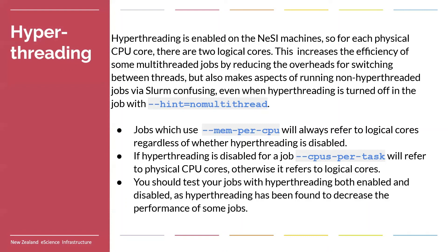One way around this problem of wasted CPU time from stalled threads is to oversubscribe CPUs — that is, assign a greater number of threads to fewer CPUs. So instead of assigning two threads to two CPUs, we could assign four threads to two CPUs. Now when one of the running threads stalls, rather than the CPU being idle, it can kick off the stalled thread and start running one of the other unassigned threads, effectively eliminating CPU idle time. However, this does not come without costs. Kicking a thread off and loading a new thread on has computational overheads, and the CPU has no way of knowing how long the stalled thread will be stalled for. If stall times are short and regular enough, you can actually waste more time switching between threads than would have been saved.